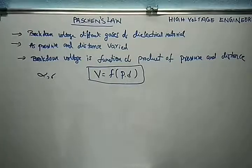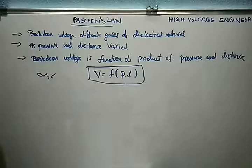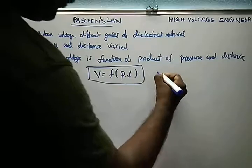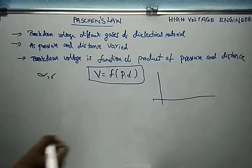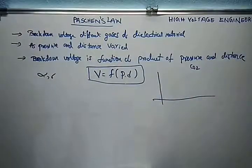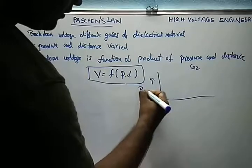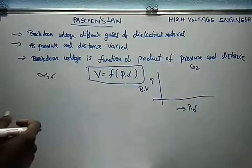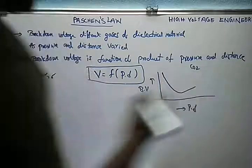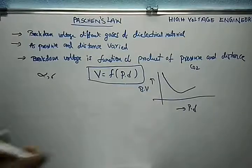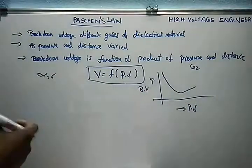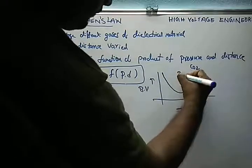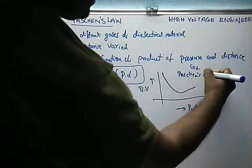There is a graph for Paschen's law. He studied different gases as dielectric materials. Let us consider CO2 as one dielectric material. In the graph, the x-axis is the breakdown voltage and the y-axis is pressure times distance. We draw the curve for CO2 dielectric material. That curve is called the Paschen's curve.